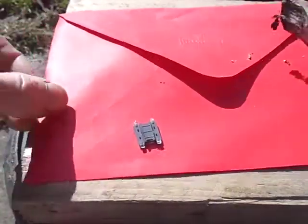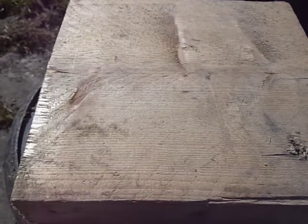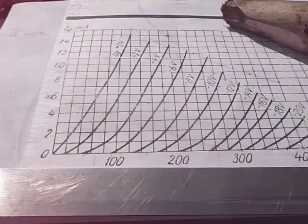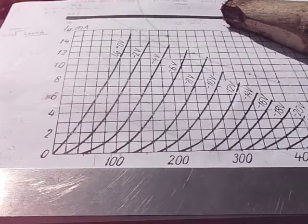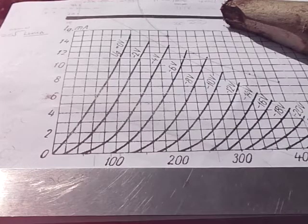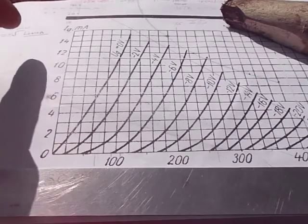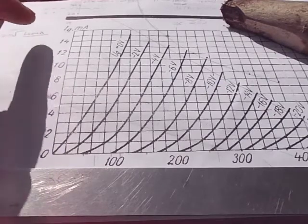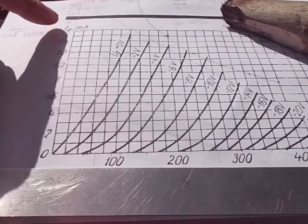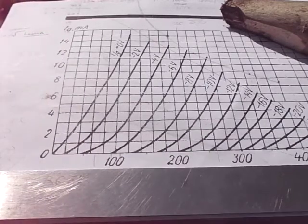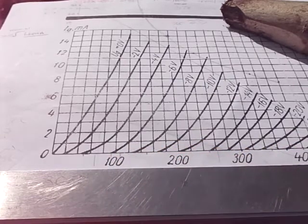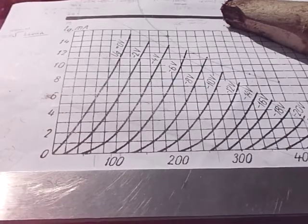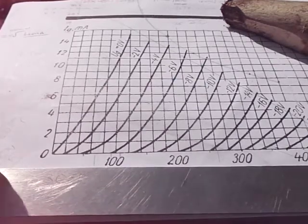Now we're going to look at the data sheet or part of a data sheet for a valve. This is the static characteristics for the Russian 6SN7. On the left here we've got the anode current represented by an I. Current is always represented by an I, so we're going right back to basics here. On the bottom we've got the anode voltage UA. Sometimes voltage is represented by V, sometimes represented by U.